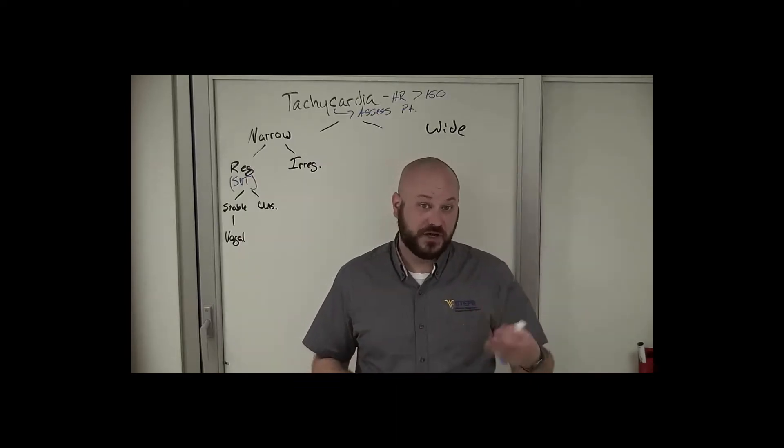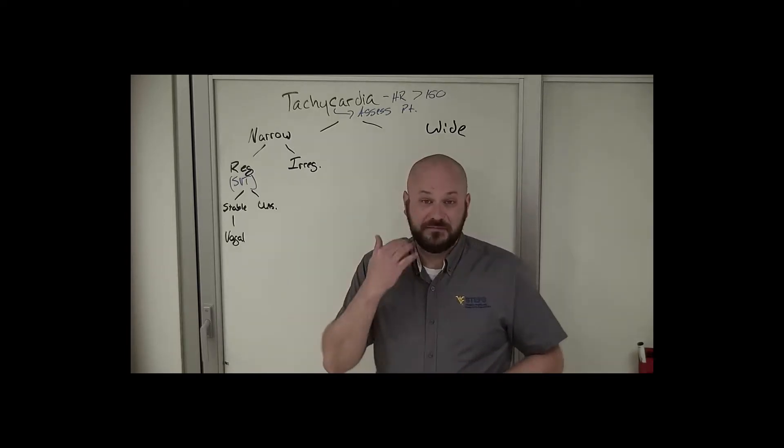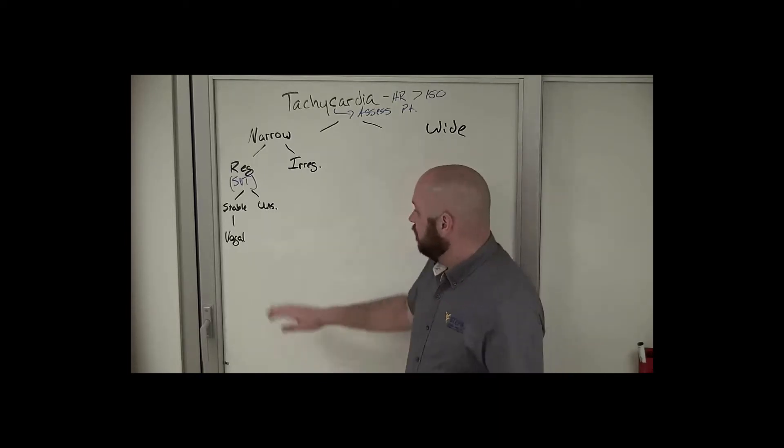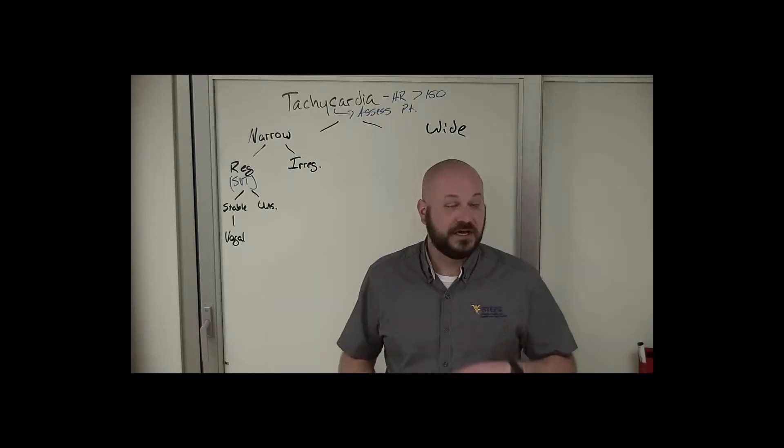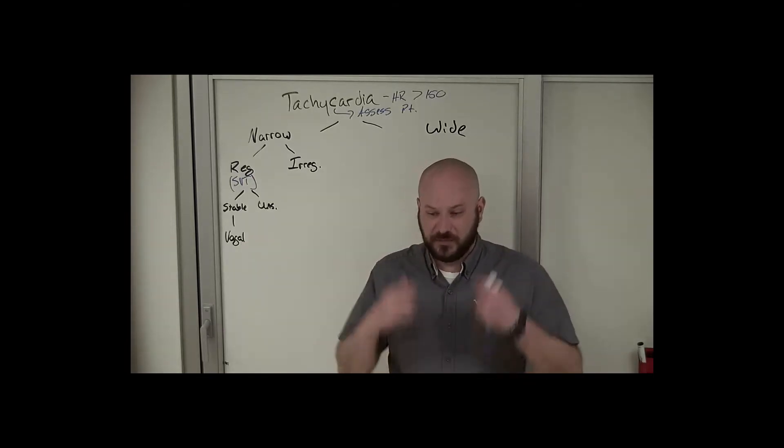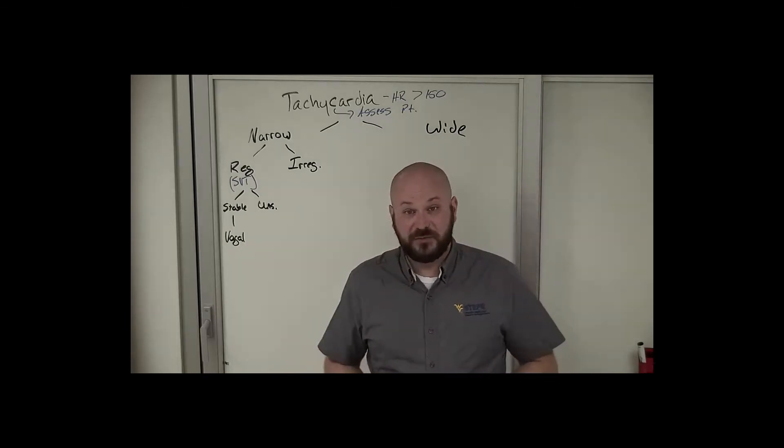In the otherwise healthy twenty-something patient, vagal maneuvers with carotid massage is probably appropriate, but know that there's a high risk here. A lot of our patients are not otherwise healthy twenty-somethings. So know that there are better, easier vagal maneuvers to use. For example, the Valsalva maneuver - blowing against the closed glottis like you're popping your ears - that's a good one. Bear down like you're going to have a bowel movement is another great vagal maneuver. Oftentimes patients won't bear down hard enough, so one thing you can do is push on their belly - cause them to really flex and squeeze those abdominal muscles. That will often drop their heart rate very quickly.